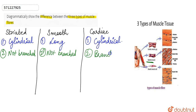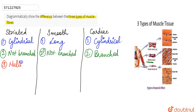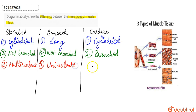Considering the nuclei: in the case of striated muscle we can see many nuclei — they are multi-nucleate. Smooth muscles are uninucleate, meaning there is only one nucleus present. Cardiac muscles are also uninucleate.